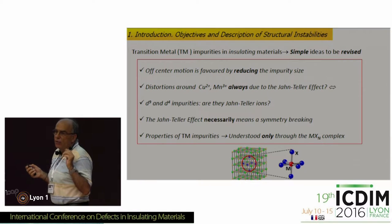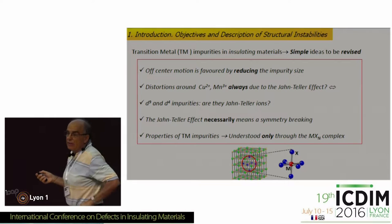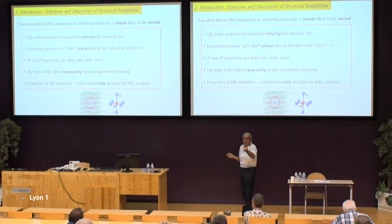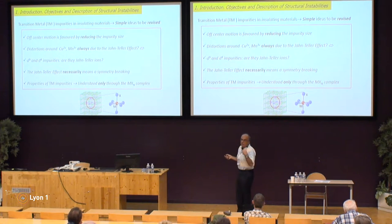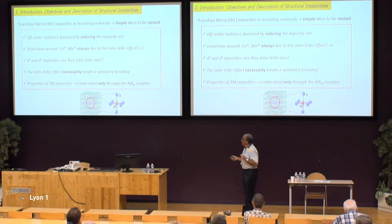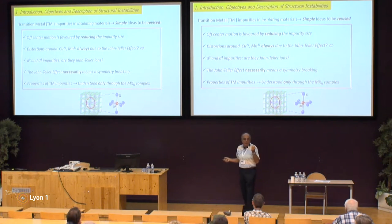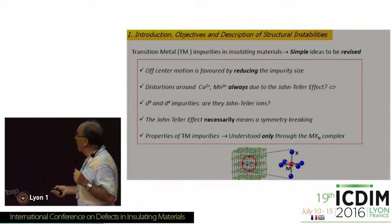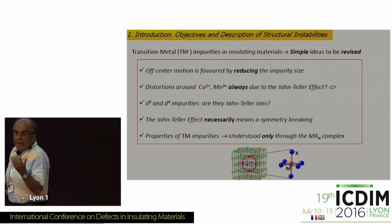Concerning the main ideas I would like to discuss: first, it is often assumed that the off-center motion is essentially favored by reducing the impurity size — if the impurity is small, it is easier to move around the lattice. On the other hand, when there is copper 2+ as impurity and there is some distortion, everybody says it is due to the Jahn-Teller effect. Also, it is assumed that the Jahn-Teller effect necessarily means symmetry breaking. Finally, it is assumed that the properties of transition metal impurities in insulating materials can be understood considering only the complex formed by the transition metal and the closest ligands.